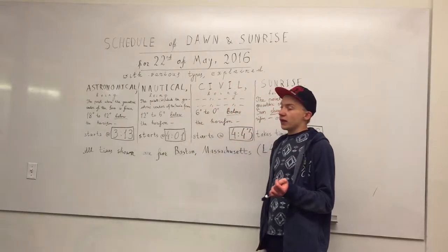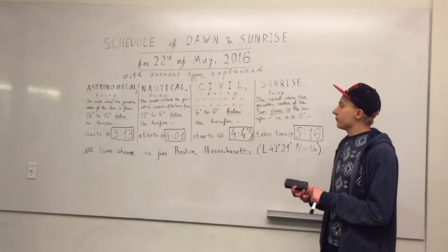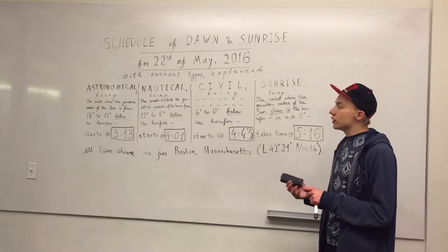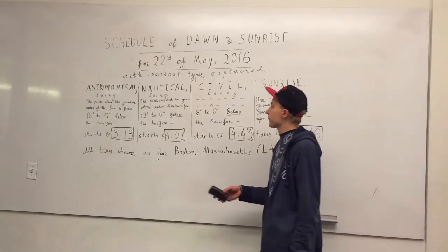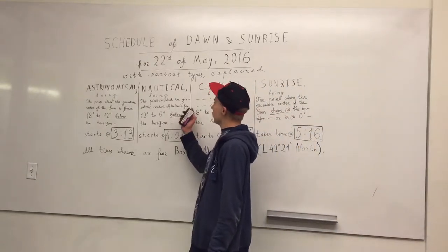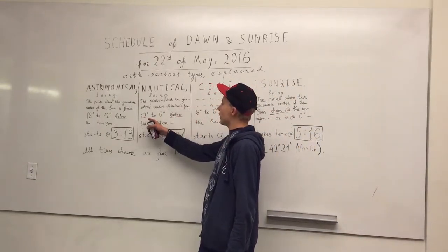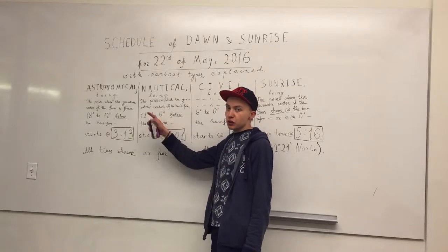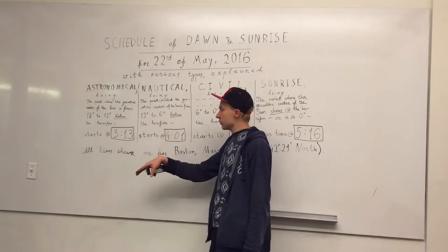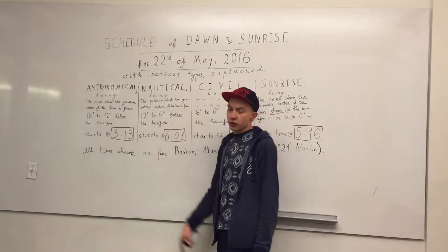Nautical twilight is designed especially for military purposes. It is the point at which the geometric center of the sun is at 12 degrees below the horizon, and it ends when it is at 6 degrees below the horizon.